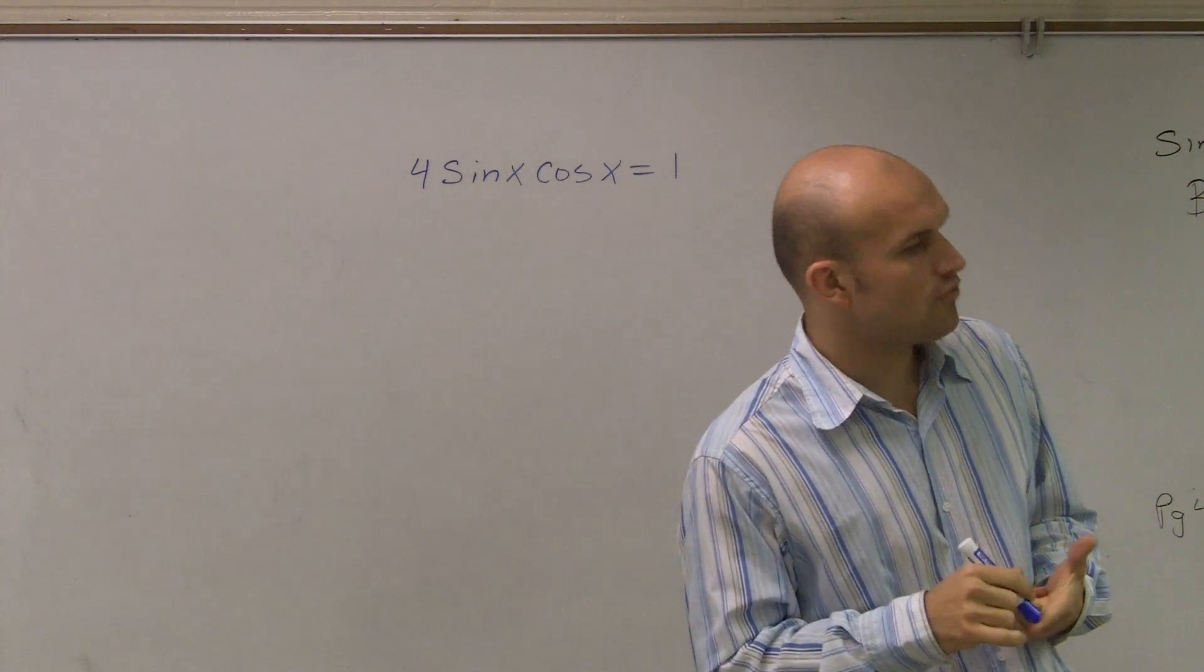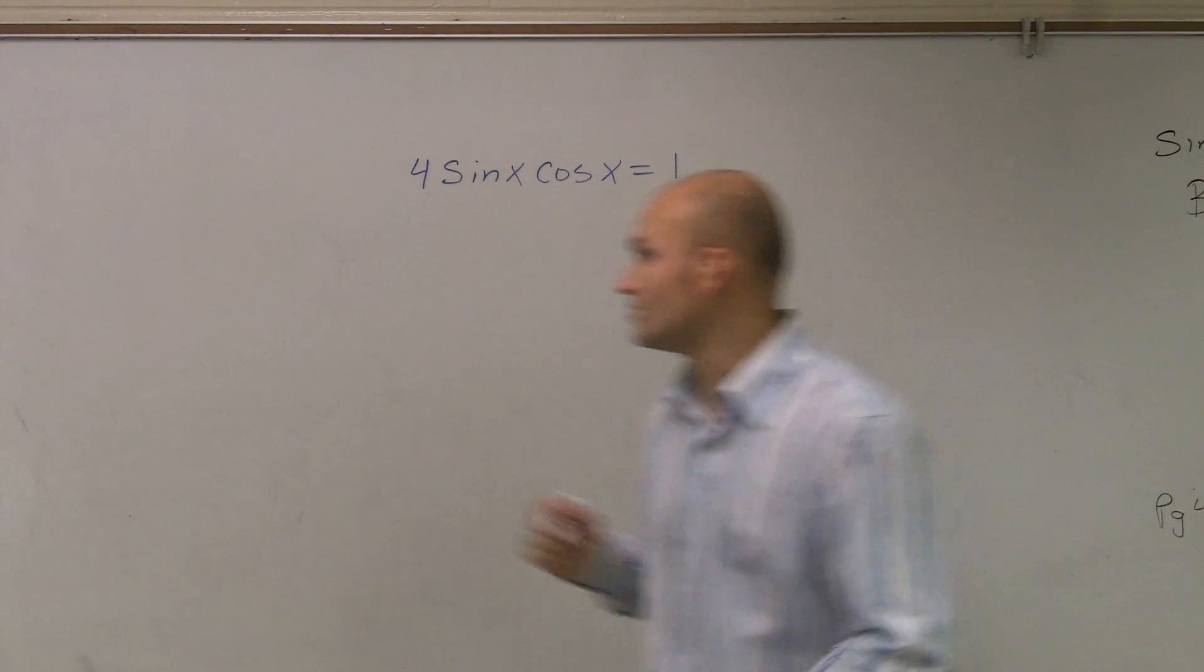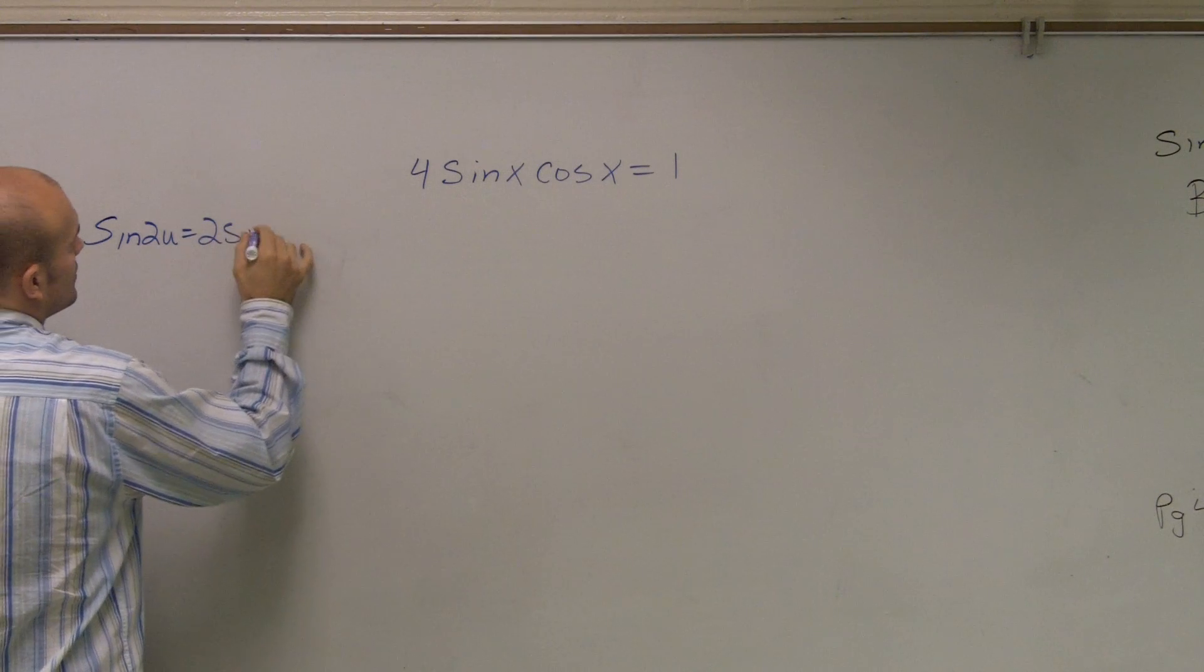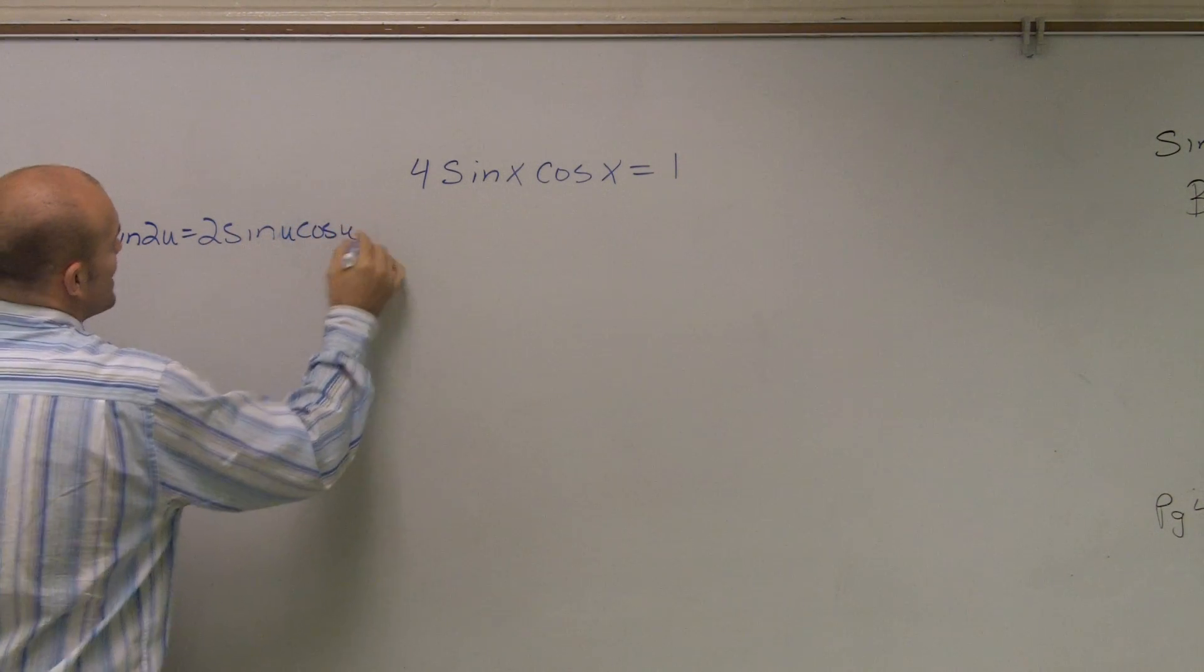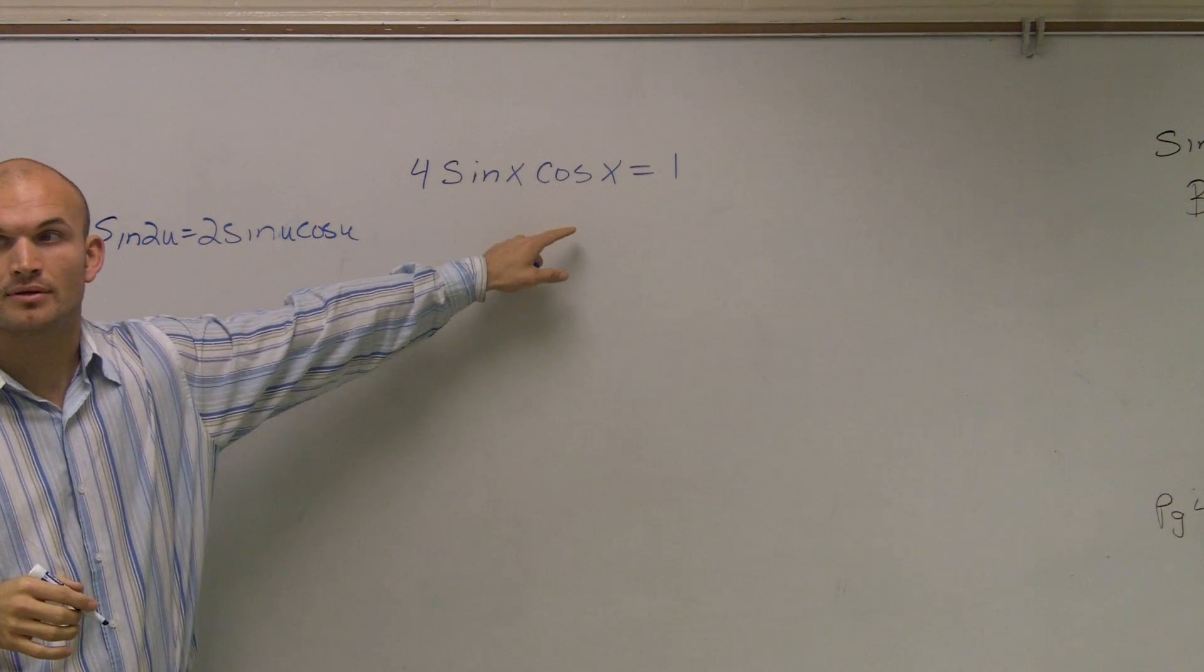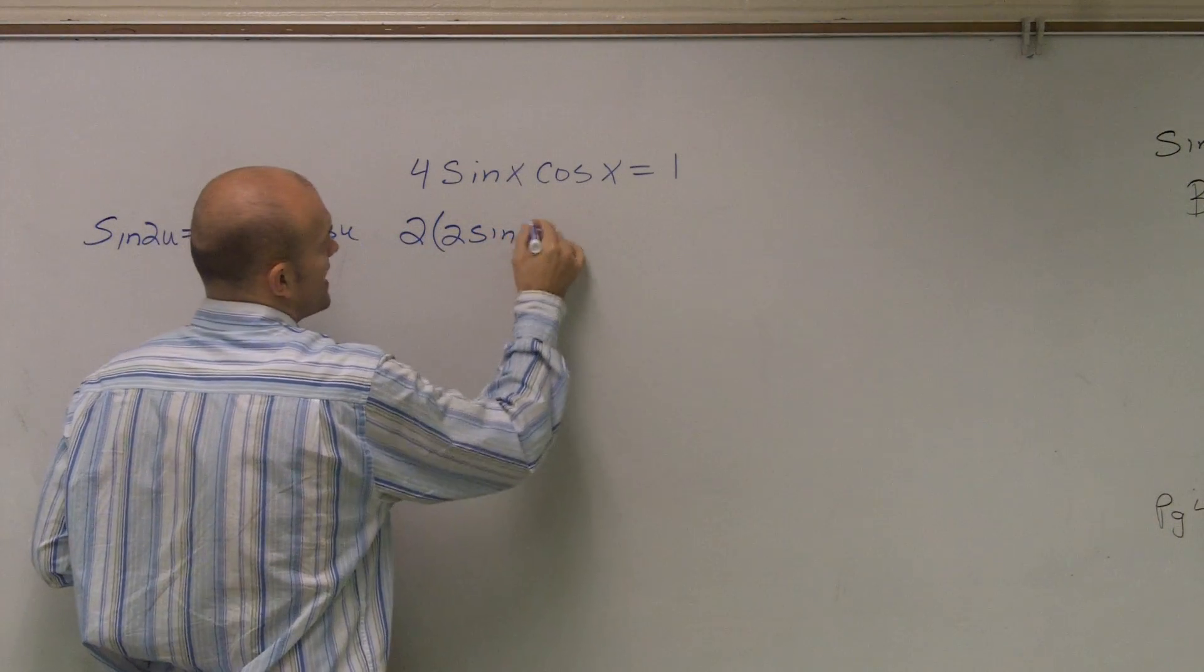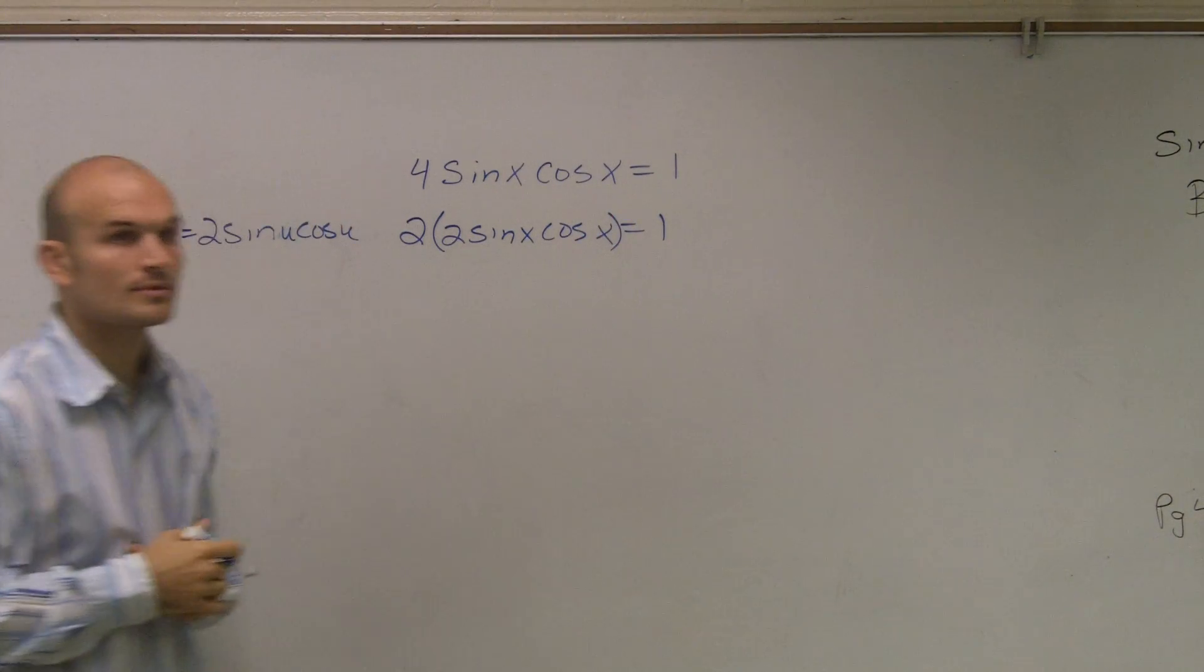Well, take a look at the formulas for double angles. When you take a look at the formulas for double angles, you do see that sine of 2u equals 2 sine of u, cosine of u. Right? So could I maybe rewrite this problem by using that formula? And yeah, exactly. You could say 2 times 2 sine of x, cosine of x equals 1.